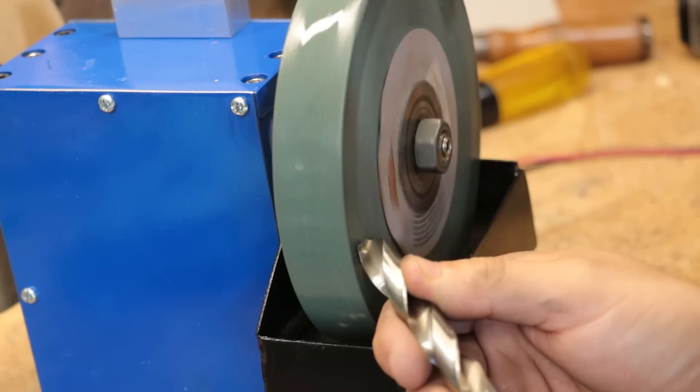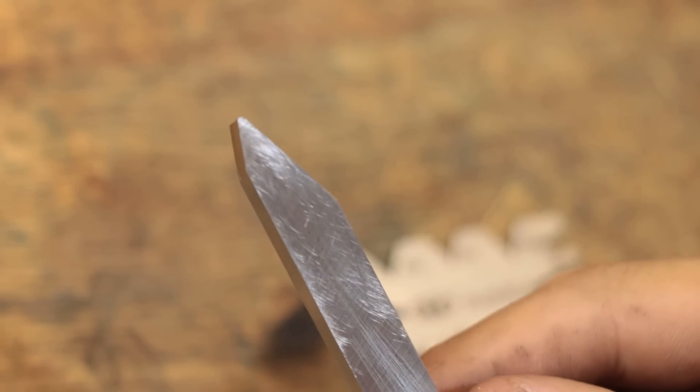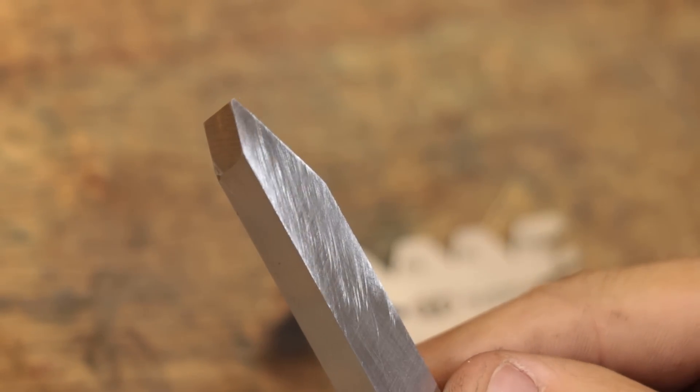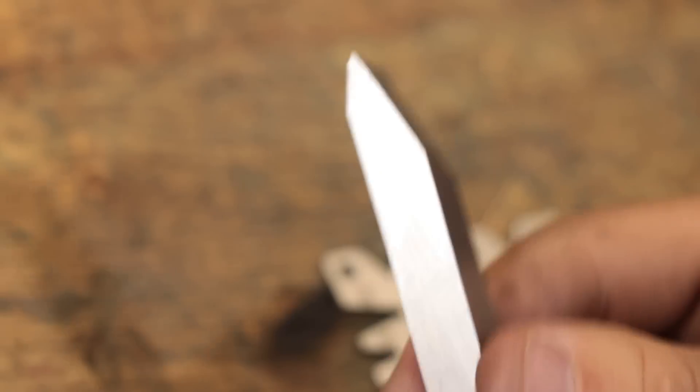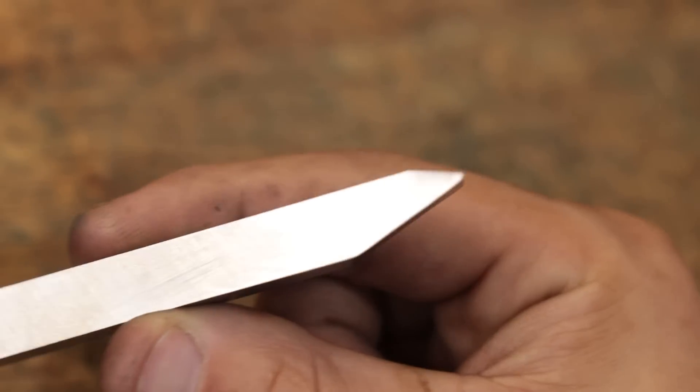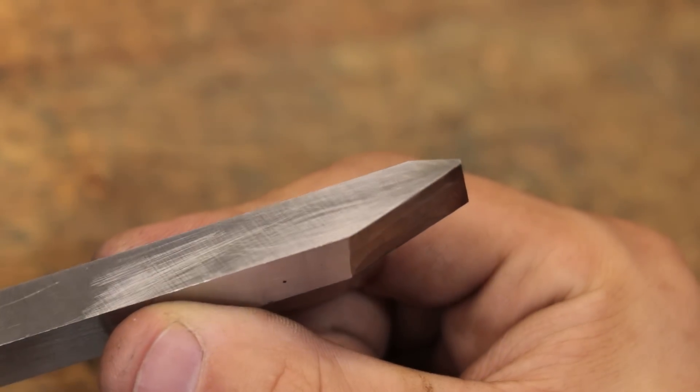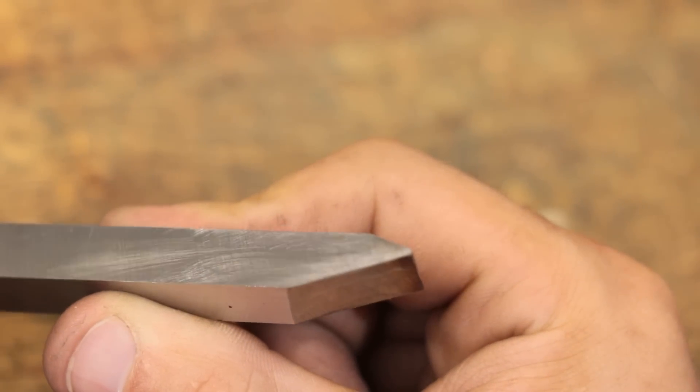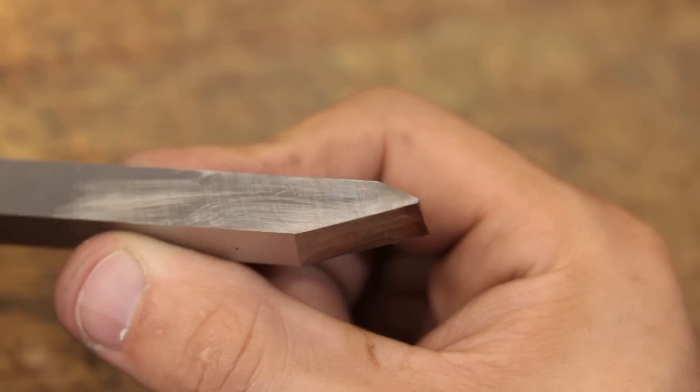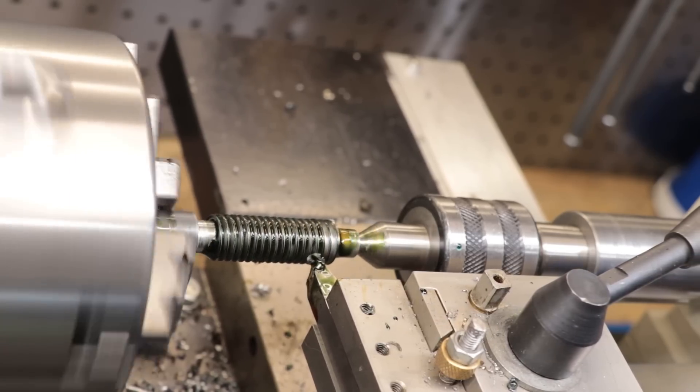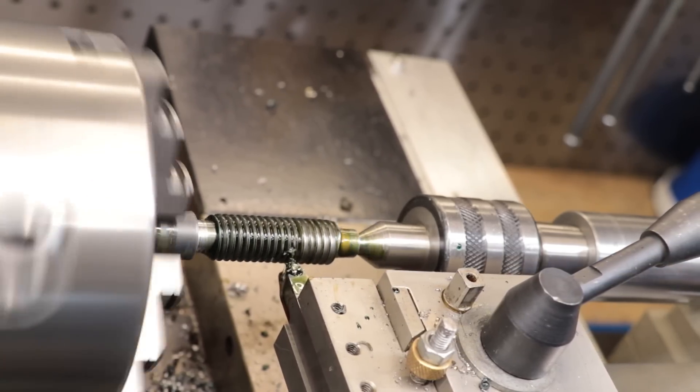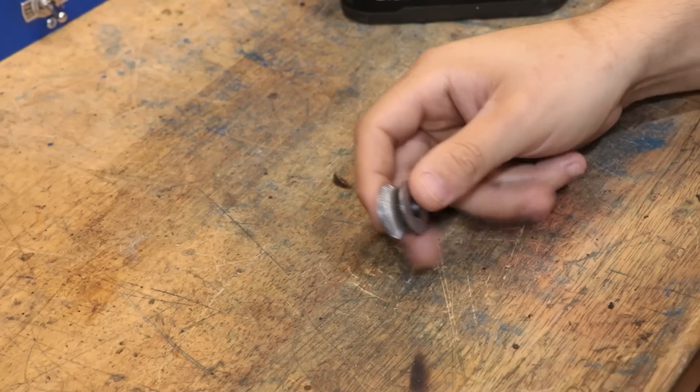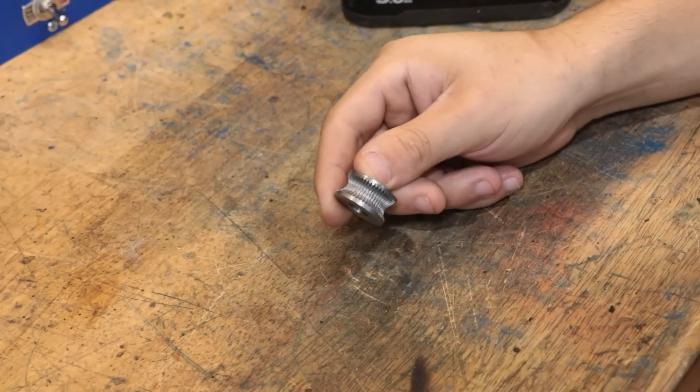Now if you do choose to use this method, I would still recommend that you use an ACME, or a metric trapezoidal cutter. ACME cutters do produce a 14.5 degree pressure angle, which is correct for a lot of older gears, and trapezoidal should give you 15. Now the width across the flats are still going to be wrong, so you won't be producing a proper gear profile, and it's still going to be circumference driven, not diameter. But you'll still end up with something that's very usable. Not perfect, but if it does fit within the constraints of your design, I don't see why something like this wouldn't work, at least in a pinch. And if that's all you need, I don't see why it wouldn't work.